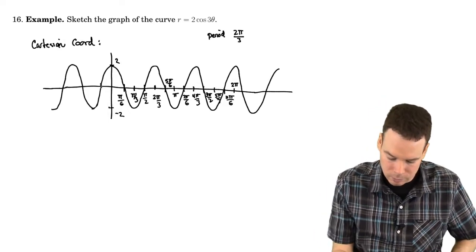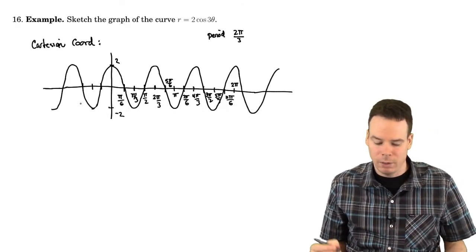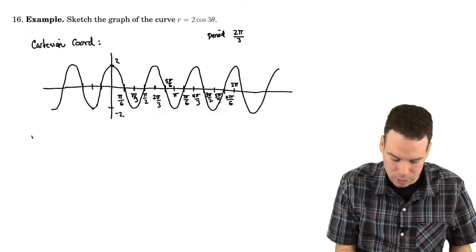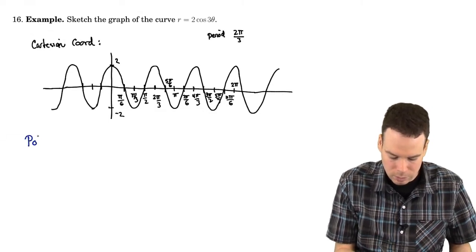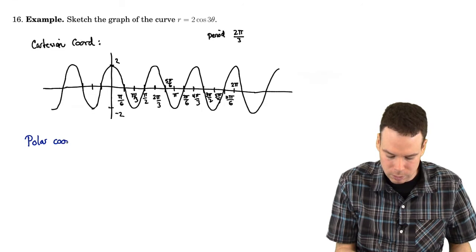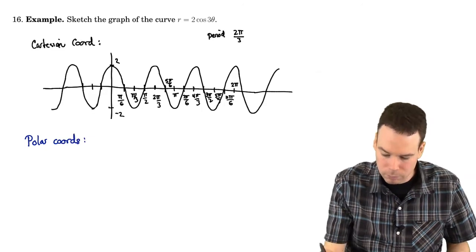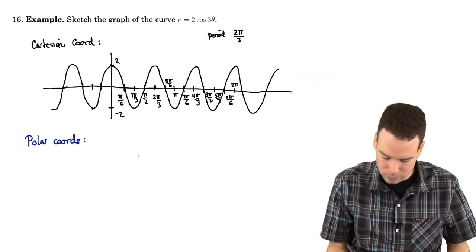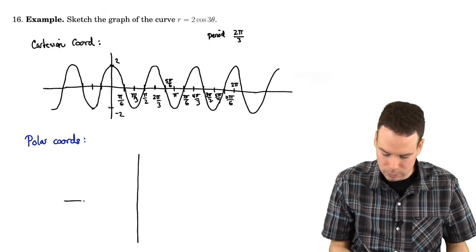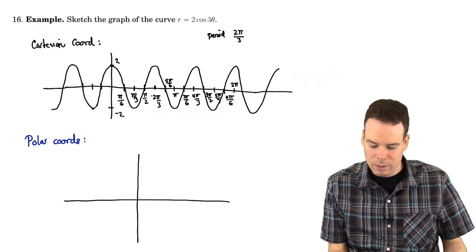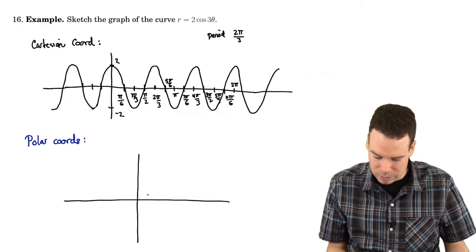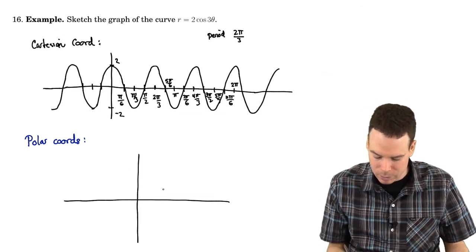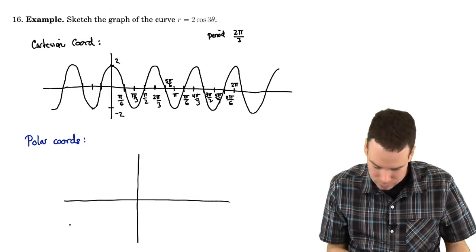And then you can do the same thing in the other direction. Let's see if we've got now enough information to get our polar coordinates sketched. So here it is now in polar coordinates. We've got all of these angles here that are places where it seems something interesting is happening. π by 6, π by 3.